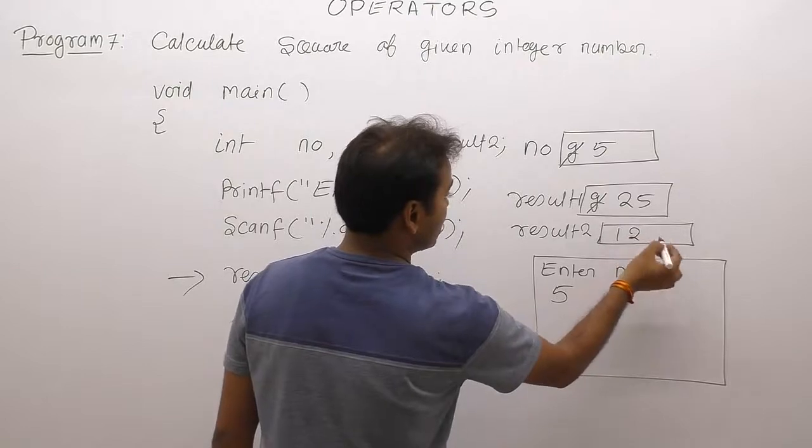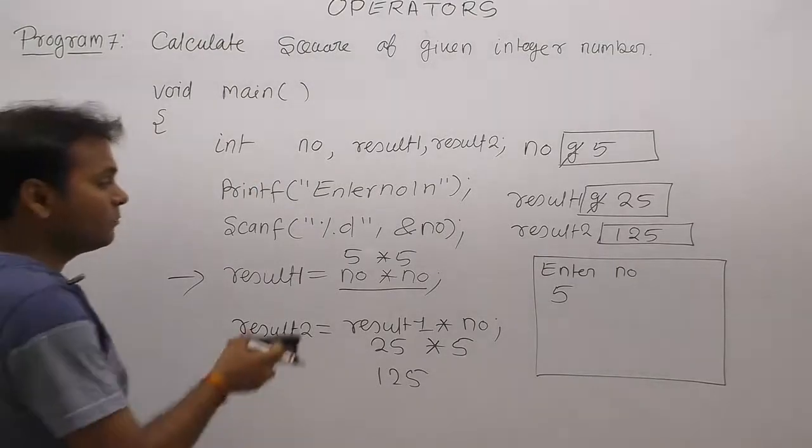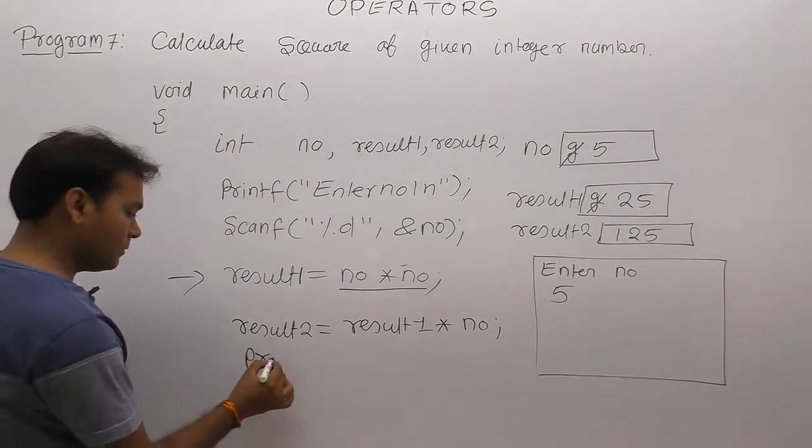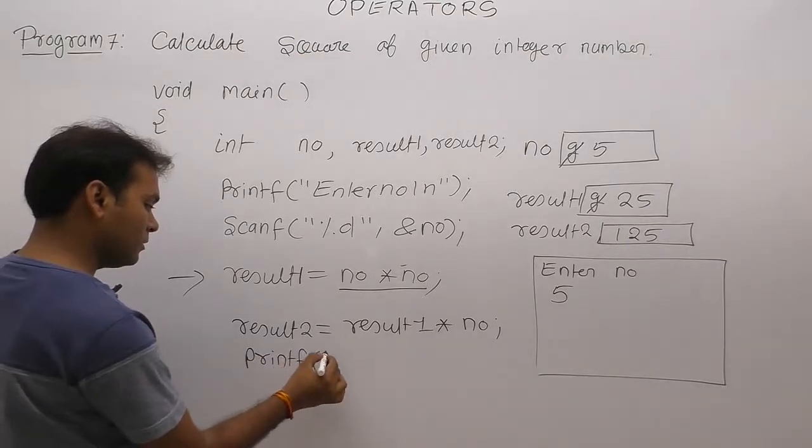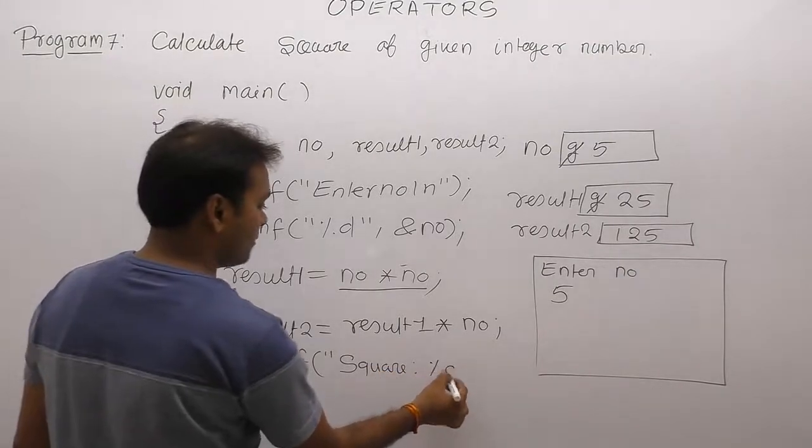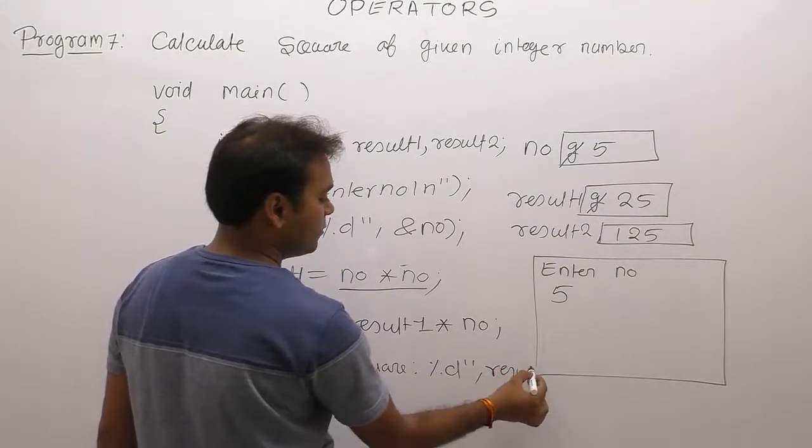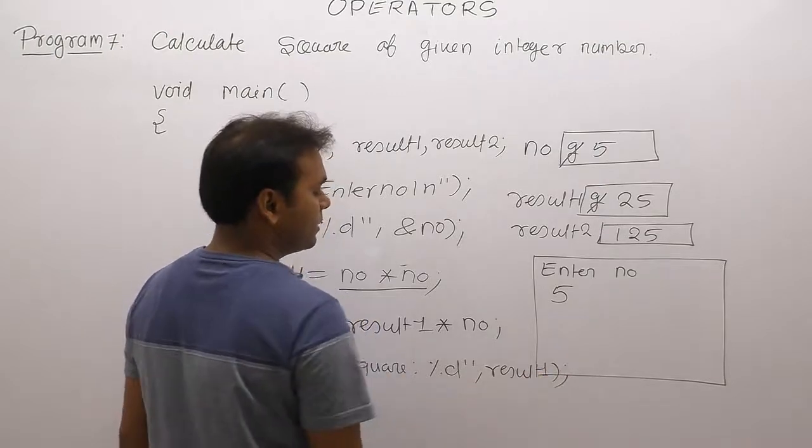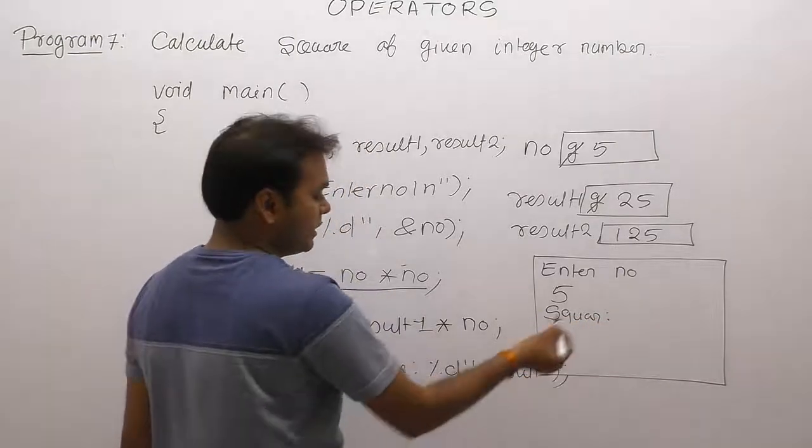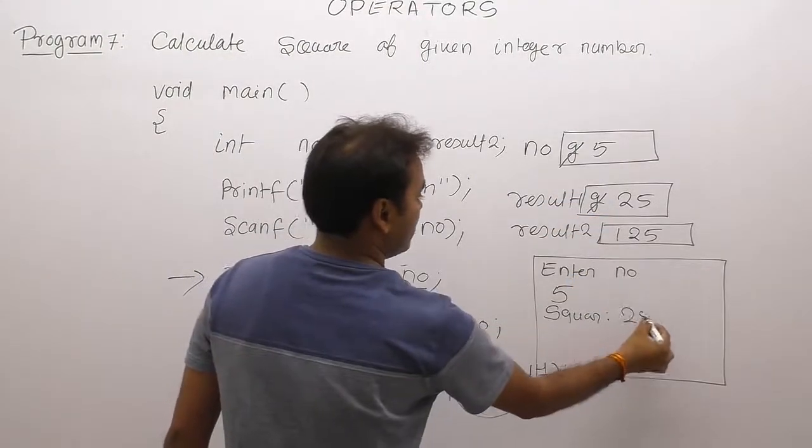Finally, display value of result1 and value of result2 by using simply printf. Result 5 square is, then percent d. Square value inside variable result1, therefore we are displaying value of result1. Operations, square value of result1 is, percent d is replaced by value of result1 which is 25.